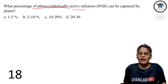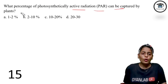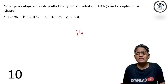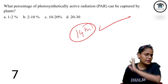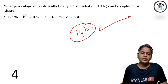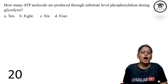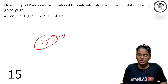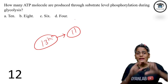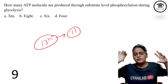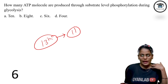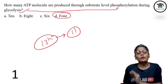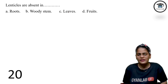What percentage of photosynthetically active radiation can be captured by plants? This is directly given in Chapter 14. The plant can absorb 2 to 10% of the radiation. Next: how many ATP molecules are produced during glycolysis? From the respiration chapter, Chapter 13 in class 11, there is a direct table for oxidative phosphorylation and substrate level phosphorylation. In glycolysis, substrate level phosphorylation produces 4 ATP molecules — directly from the textbook table.